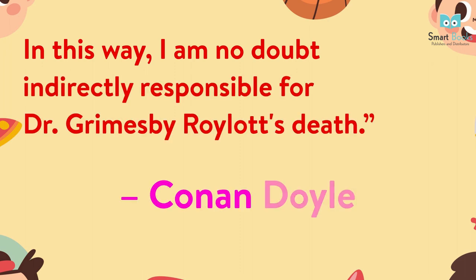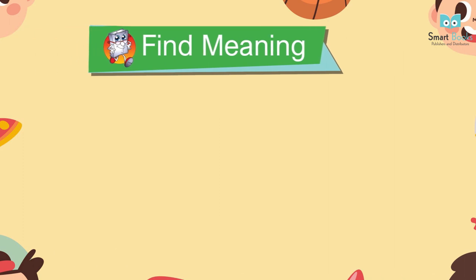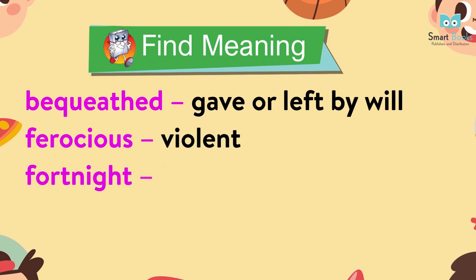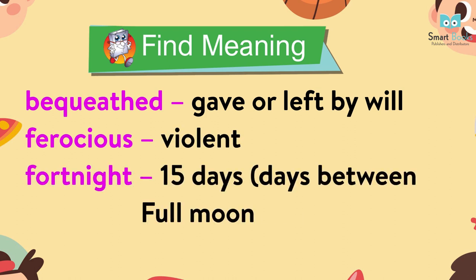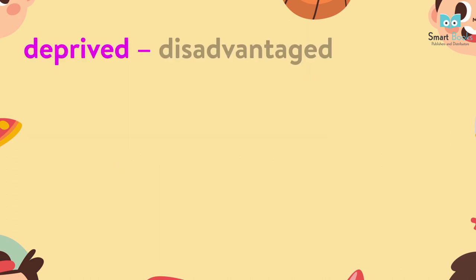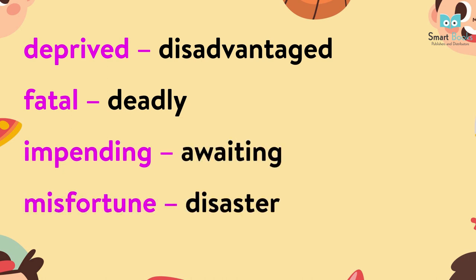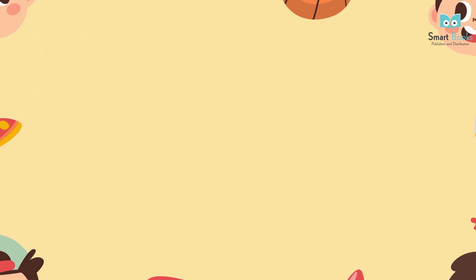Vocabulary: Bequeathed — gave or left by will. Ferocious — violent. Fortnight — 15 days, days between full moon and new moon. Deprived — disadvantaged. Fatal — deadly. Impending — awaiting. Misfortune — disaster.